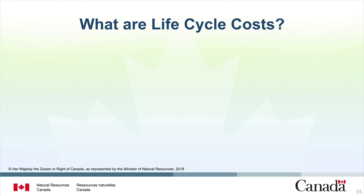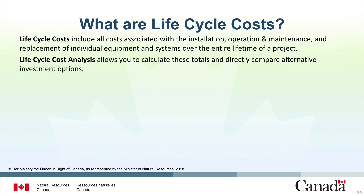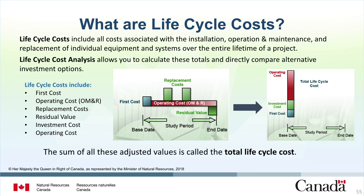Lifecycle costs include all costs associated with the installation, operation and maintenance, and replacement of individual equipment and systems over the entire lifetime of a project. Lifecycle cost analysis allows you to calculate these totals and directly compare alternative investment options. Let's walk through different project costs that add up to a total lifecycle cost. First, initial investment costs occur at the beginning of the study period. Second, OM&R costs — such as energy, routine maintenance, and periodic repair costs — occur continually through the study period. Third, replacement costs, like replacing an HVAC system, occur at scheduled times during the study period. Fourth, at the end of the study period, there may be a residual value for the equipment or systems. The sum of all these adjusted values is called the total lifecycle cost.